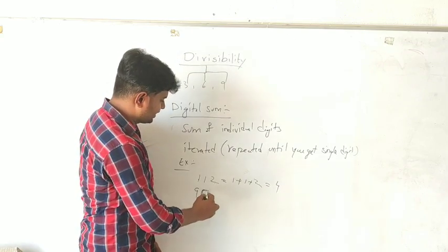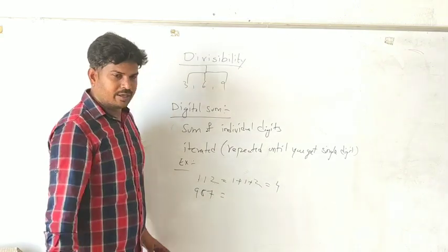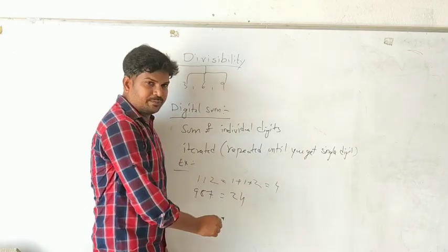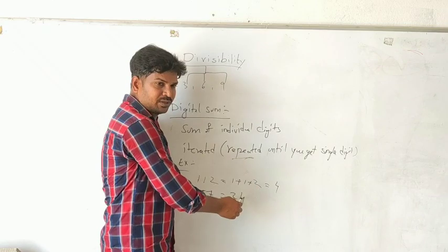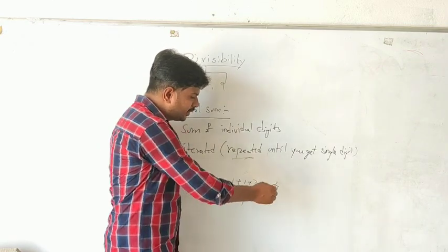What happens if you have 987? It is 24, and repeated until you get a single digit. So we have to repeat it again like 2 plus 4 which equals 6. Until you get a single digit, you have to repeat this.